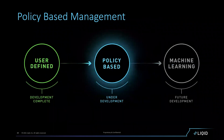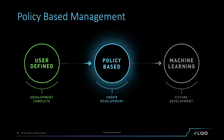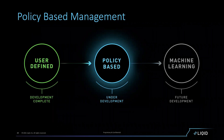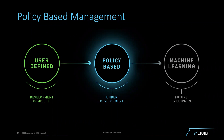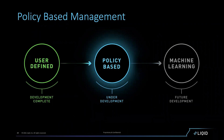Today most customers use a user-defined environment — they specify the server configuration they want with a given number of GPUs. The next evolution will quickly move to policy-based: when storage goes above 80% utilized, automatically give the server more storage; at 10 PM when GPUs aren't being used, move them to the video rendering server or blockchain environment; when a DRAM module fails, move its storage and GPUs to the spare node. There are policies for performance, failure domains, and time of day.